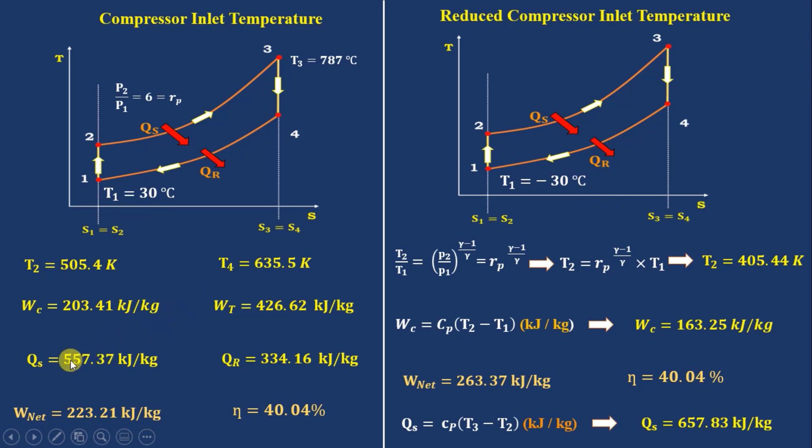Whereas for 30 degrees Celsius, it is 557.37 kJ per kg. Here you can check it: 100 kJ per kg is increased. This means when outlet temperature of compressor reduces automatically, the heat given to the combustion chamber will increase.